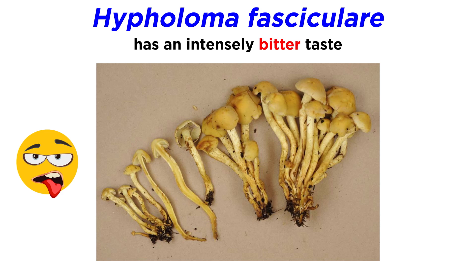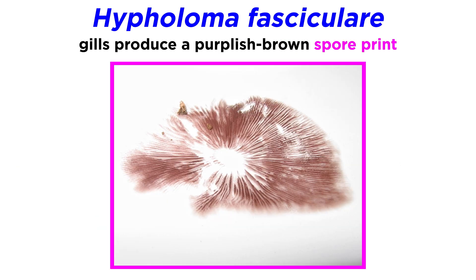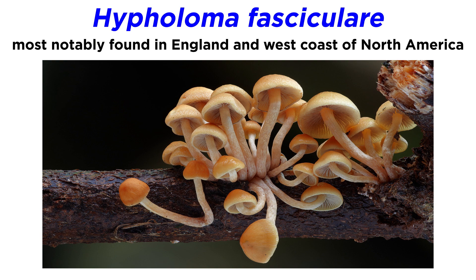If you were to take a small bite out of the cap and spit it out, it would have an intensely bitter taste. If you were to instead swallow a substantial amount of the mushrooms, you would have severe nausea, vomiting, and diarrhea. The gills produce a purplish-brown spore print, and the gill color is yellow, turning darker as they age. Sulfur tufts are widely distributed around the world, but are notably found in England and the west coast of North America.